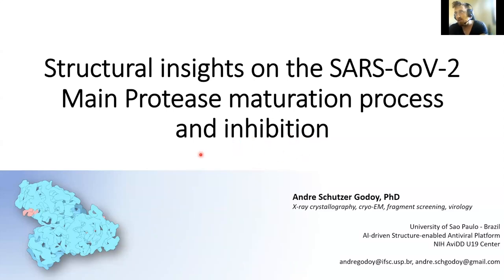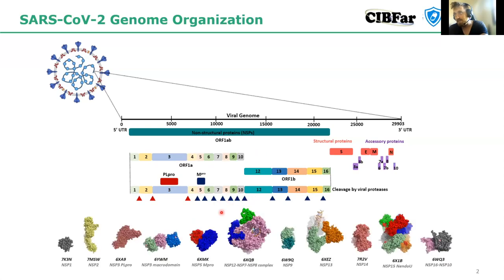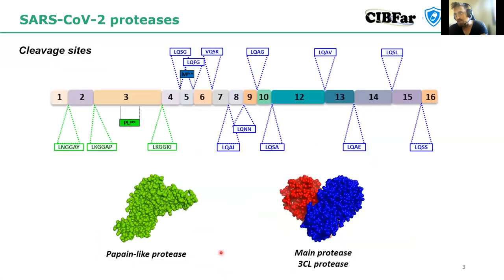Everyone is familiar that SARS-CoV-2 has a genome; it produces a polyprotein that should be matured into several distinct proteins. That work is done by two proteases mostly: one is the papain-like protease, which cleaves at three sites, and the main protease that cleaves at 11 sites.